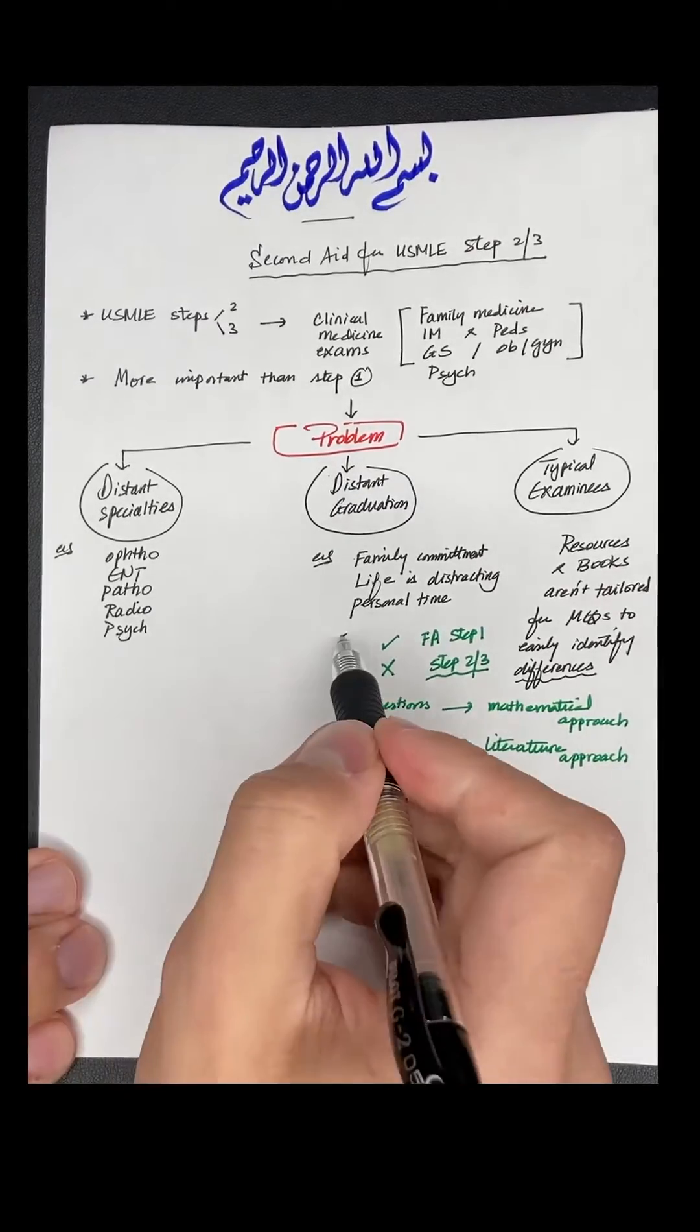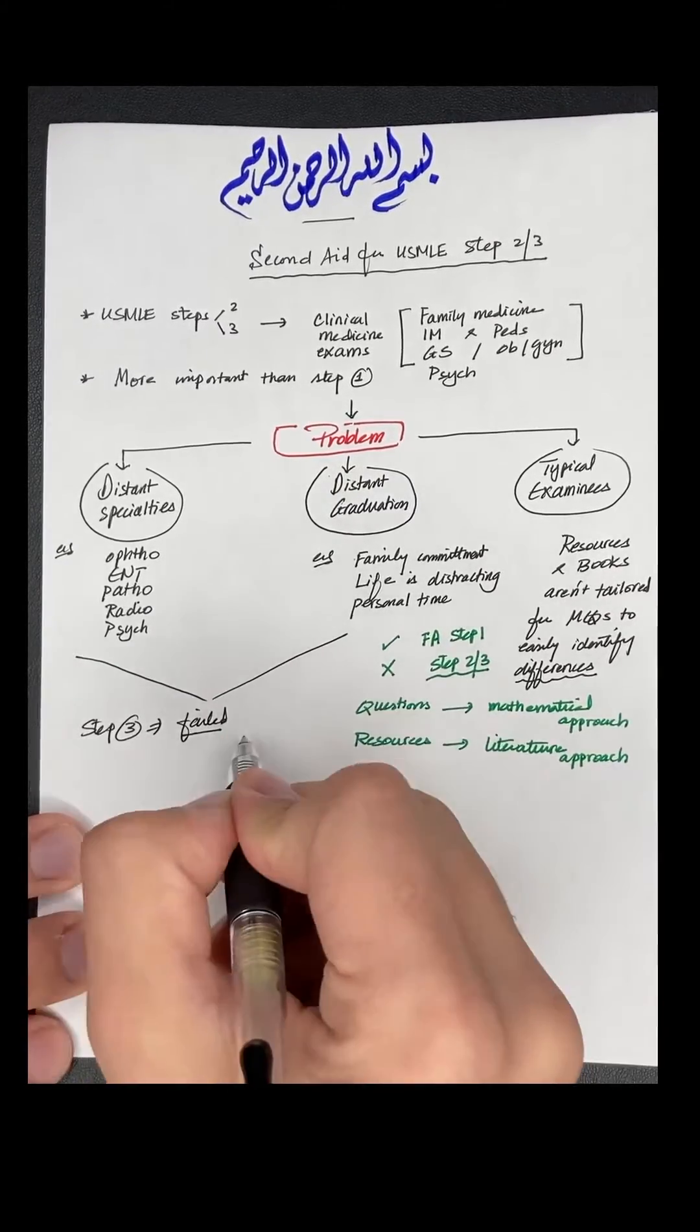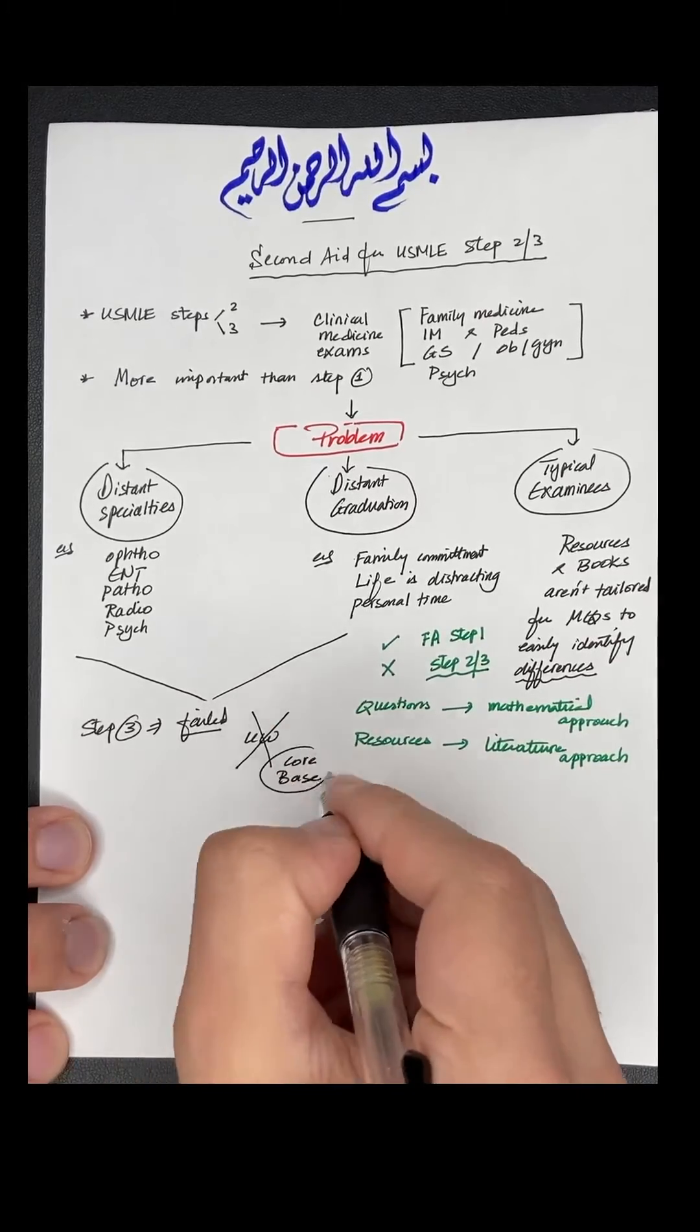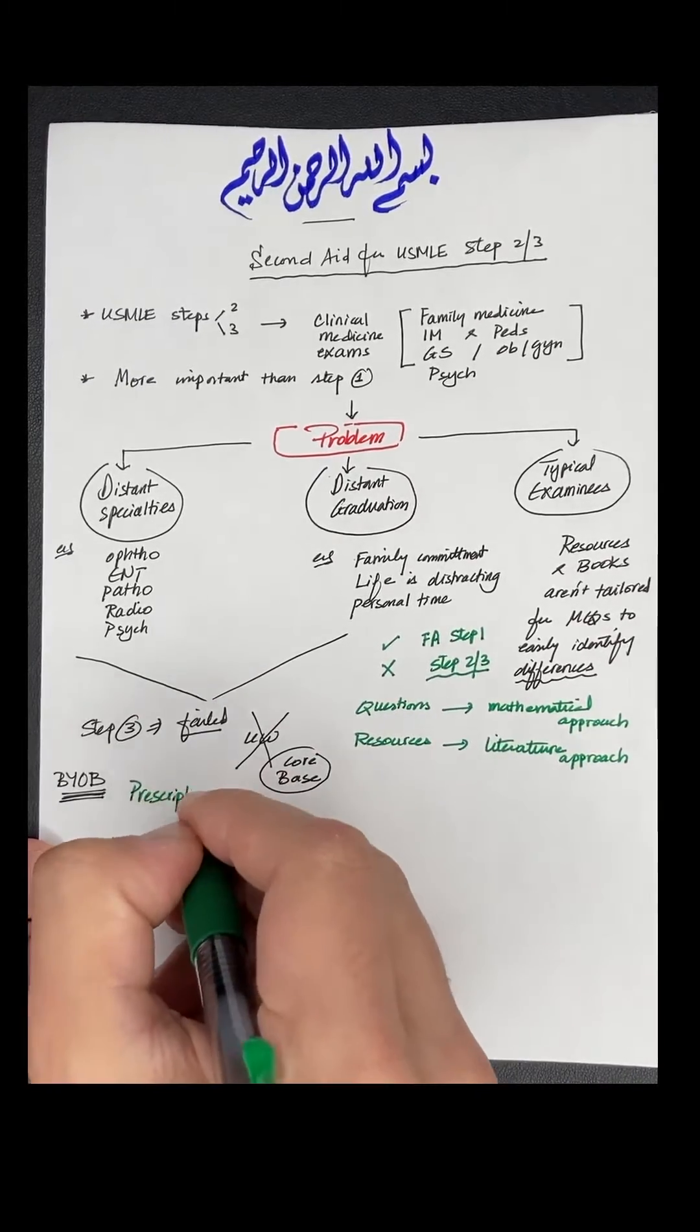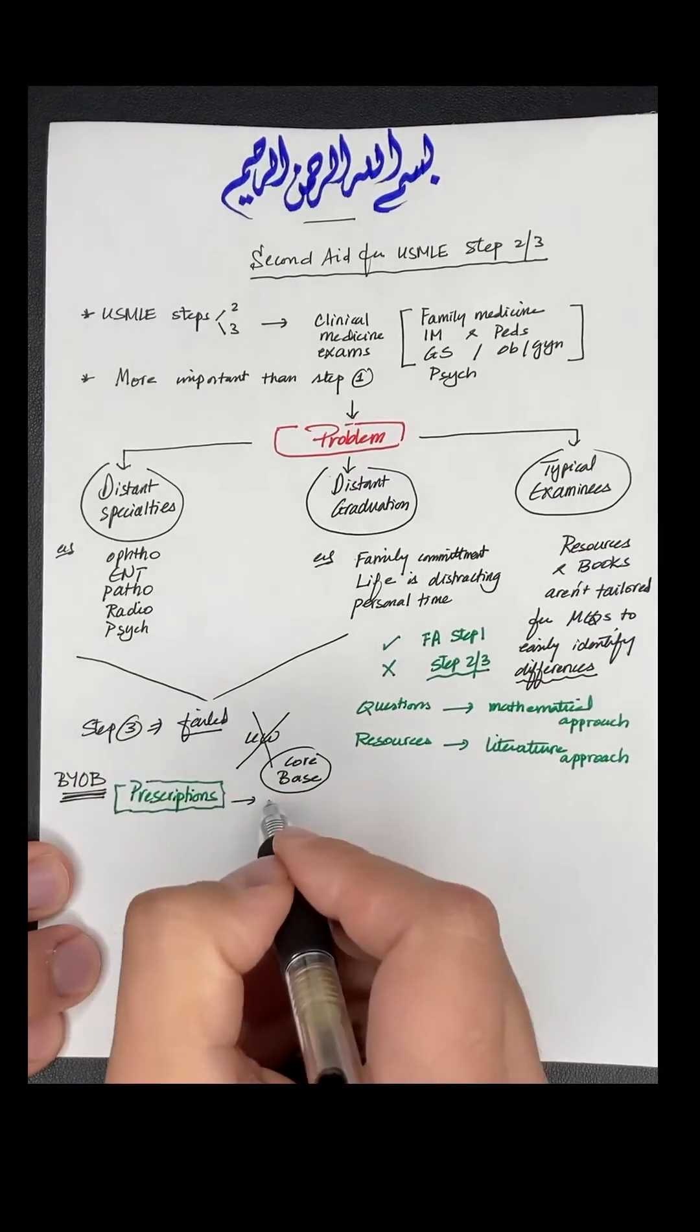So when I had these first two problems, I took the Step 3 and I failed it, even though I followed the usual advice of just do your world. But I didn't have a core base, so I decided to create my own book.